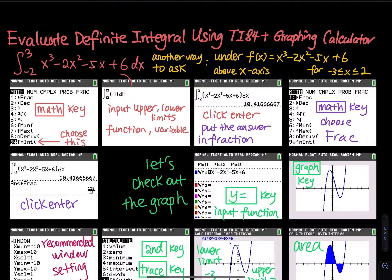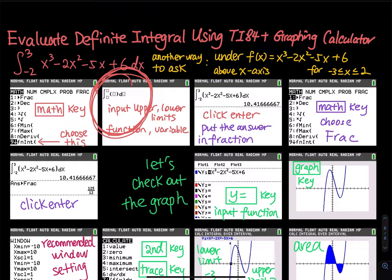Once you select that, it brings you to the home screen. It's pretty intuitive. You input the upper and lower limit, the integrand, and the variable. So you input the lower limit as negative 2 and the upper limit as 3.